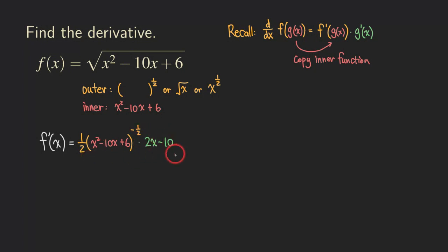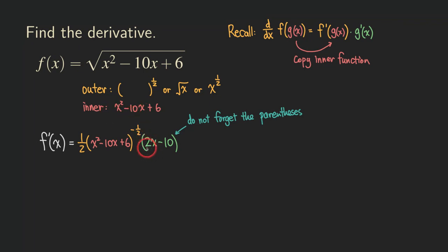This is a really common mistake that students make on the exam. You may have done the whole problem correctly, but if you forget the parentheses, you will lose unnecessary points. Make sure you put a pair of parentheses to surround the 2x minus 10. Now you have the derivative. Do not forget the parentheses when you have more than one term. If you take the derivative of the inner function and only get a single term like 2x, that's okay — you don't need parentheses. But if you have more than one term, put the parentheses.